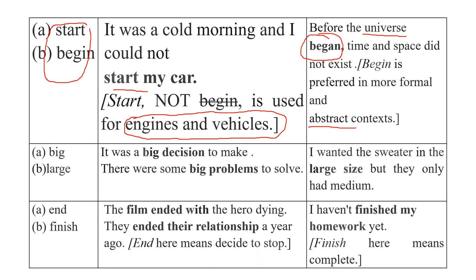Another pair is large and big. You can say a big decision or big problems — these are less concrete than real-life objects. But if you say 'I want the sweater in large size,' size is more concrete and easy to see.